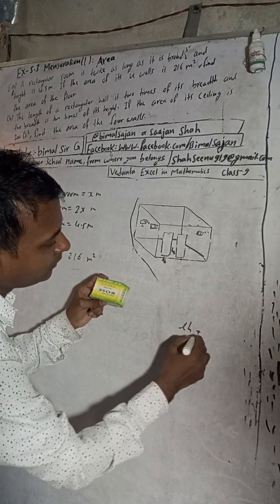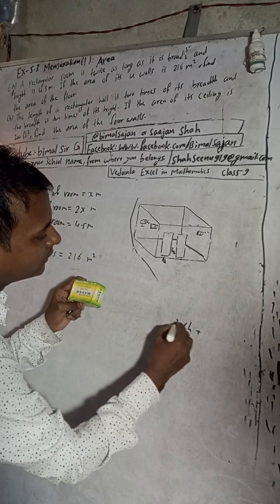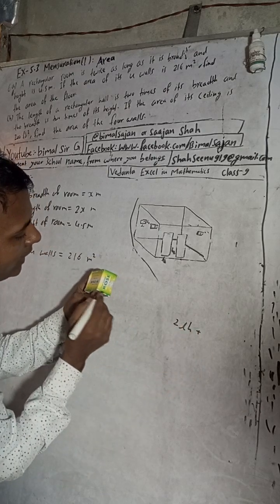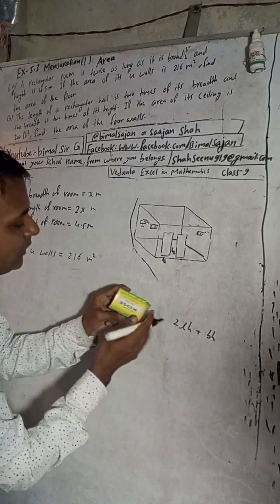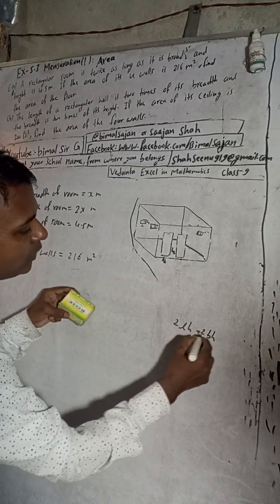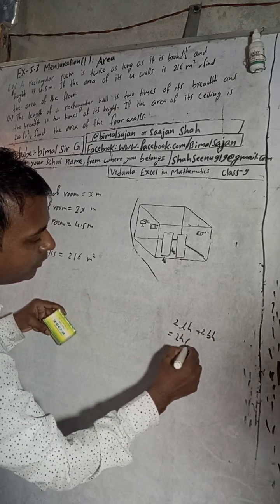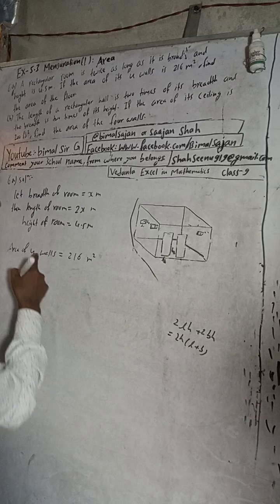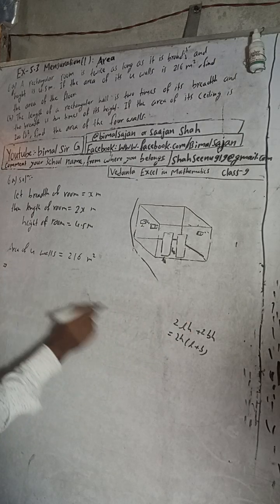Length times height will be the area of the first wall, and the opposite wall is the same, so two areas. Similarly, this wall is breadth times height, so two times breadth times height. When you take 2 common and h common, there will be l plus b. So use this formula: area of four walls equals 2h(l + b) equals 216.